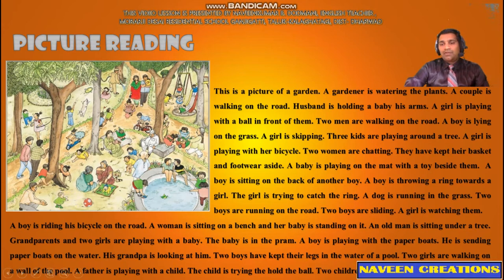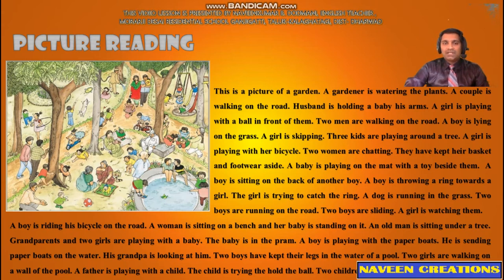Two children are playing with the swing. With this we can complete the description of this picture. You can make picture descriptions using very simple sentences by observing the actions done by the characters present in the picture.